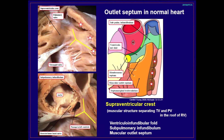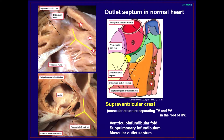The crista supraventricularis consists of three parts: the first is the ventricular infundibular fold, which is the inner curve edge between the semilunar valves and atrioventricular valves; the second is the suprapulmonary infundibulum; and the third is the muscular outlet septum between the anterior and posterior limbs of the trabecular septum marginalis. In the normal heart, these three structures are united and it is not possible to distinguish them as discrete areas. But in tetralogy of Fallot, these united structures are separated, and especially the muscular outlet septum is anterocephalad deviated.